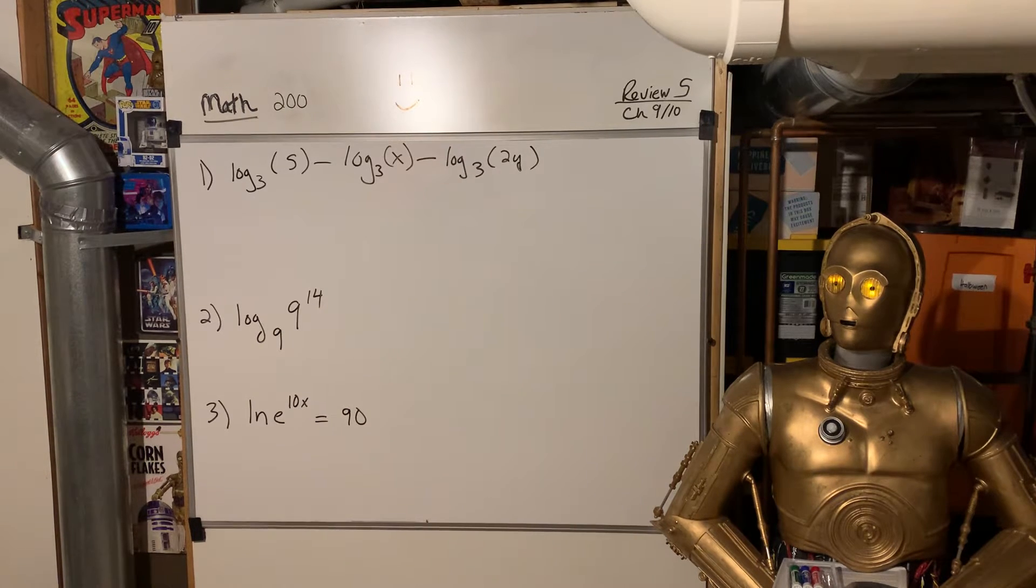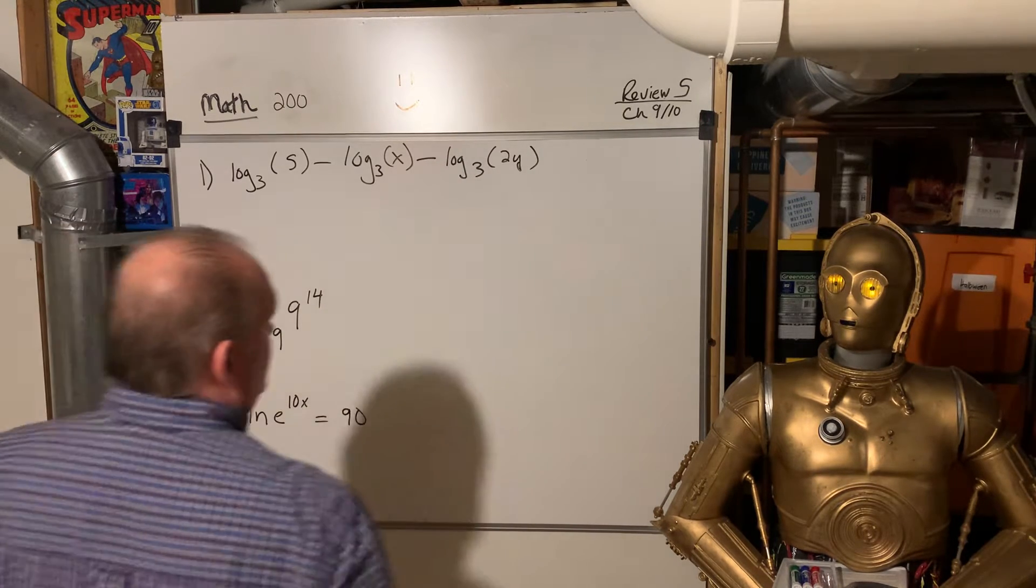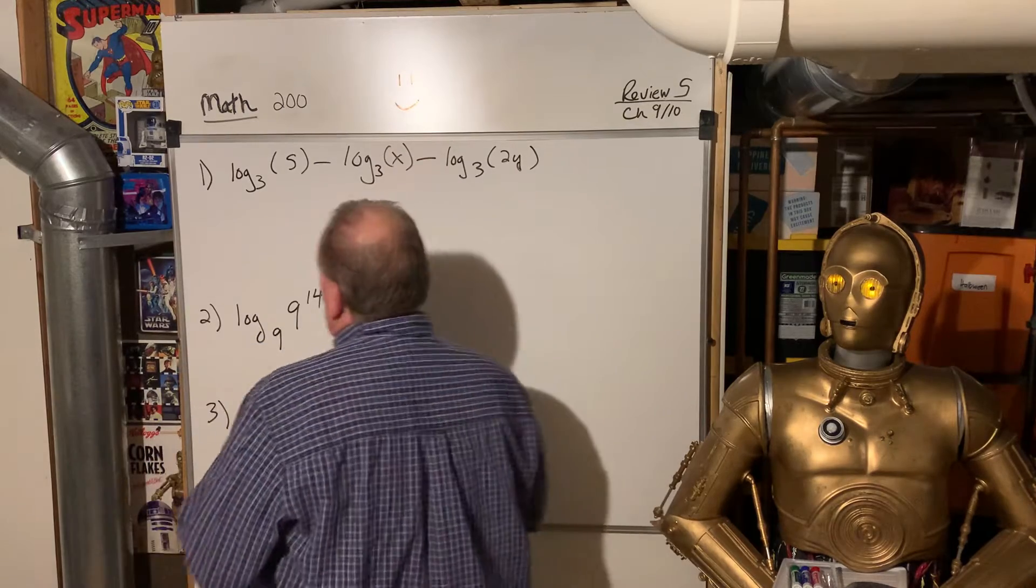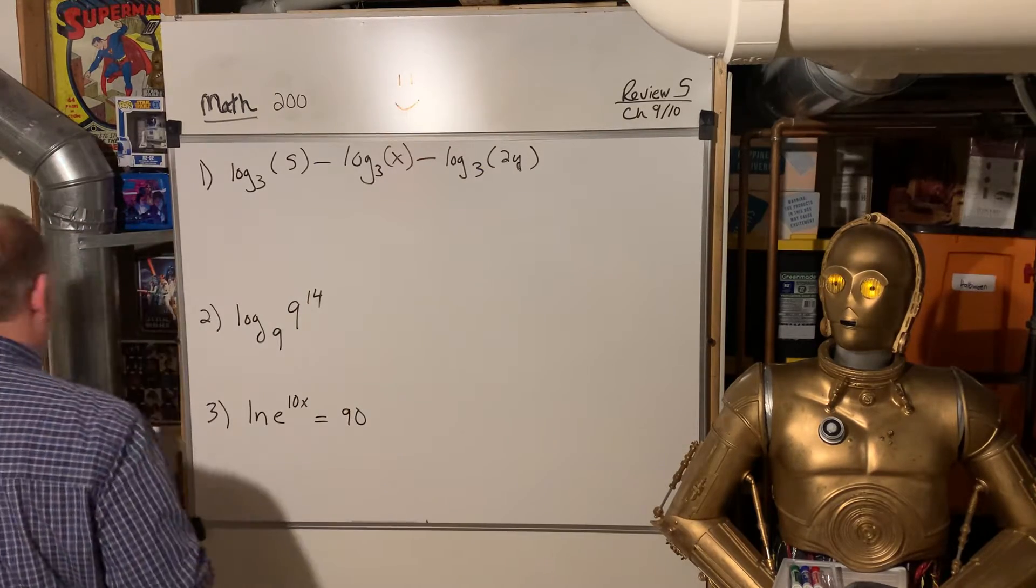Okay, we are back. This is Math 200. We're looking at Review 5, that is Chapter 9 and 10. And let's get started.